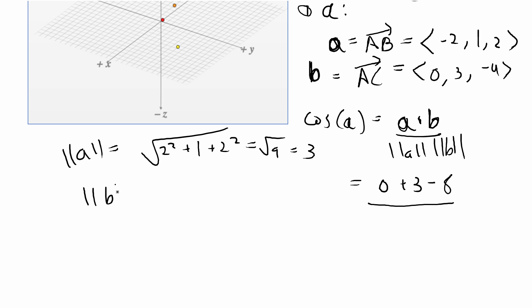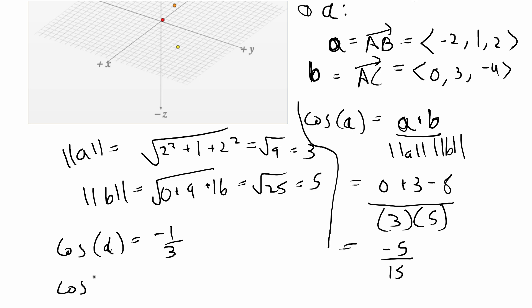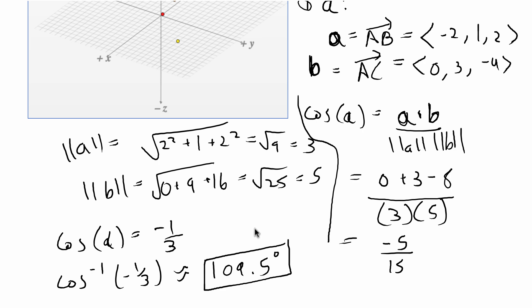And for b, that's going to be equal to 0 + 9 + 16, which is equal to the square root of 25, which is equal to 5. So we have 3 times 5, so that is equal to -5 over 15. So we have that the cosine of alpha is equal to -1/3. And if we do the inverse cosine of -1/3, that gives us approximately the degrees of 109.5°. So that gives us the result for the first angle.